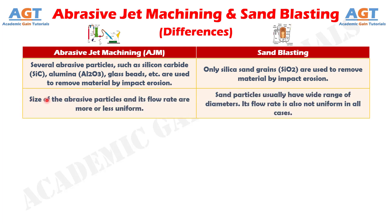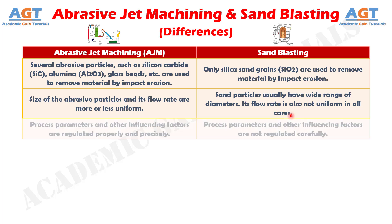Number 2: In abrasive jet machining, the size of the abrasive particles and their flow rate are more or less uniform. Whereas in sandblasting, sand particles usually have a wide range of diameters, and the flow rate is also not uniform in all cases.